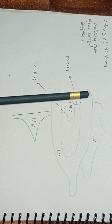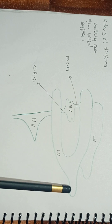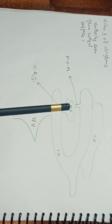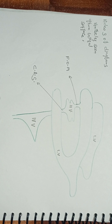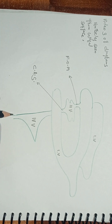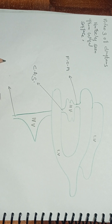CSF from the two lateral ventricles goes to the third ventricle via the foramen of Munro. CSF from the third ventricle goes to the fourth ventricle via the cerebral aqueduct of Silvius. And from the fourth ventricle, CSF goes to the central canal of the spinal cord.